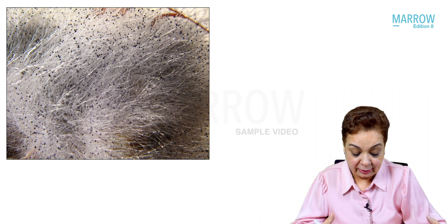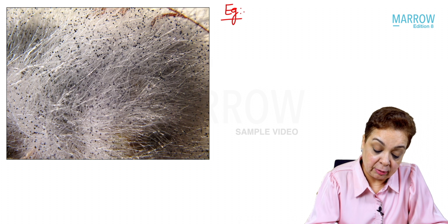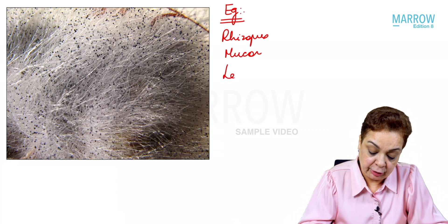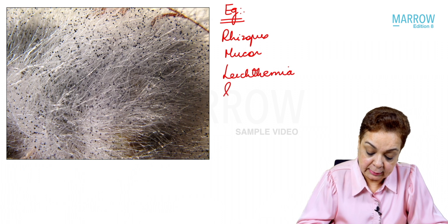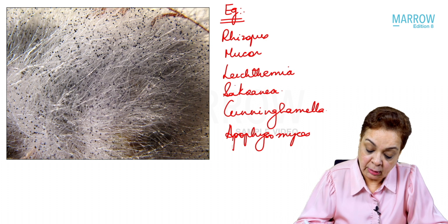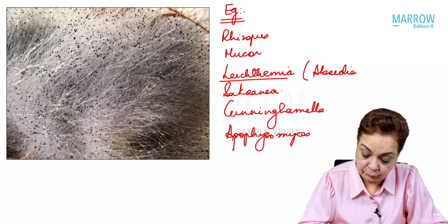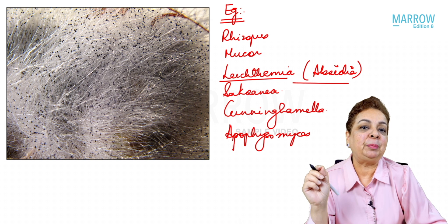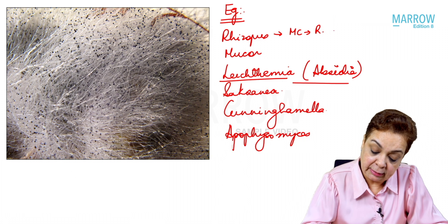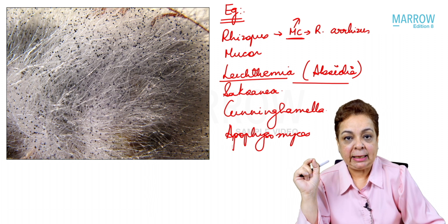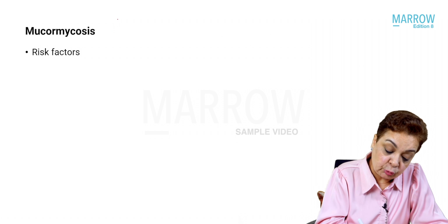Examples of Mucorales (Zygomucorales) include Rhizopus, Mucor, Lichtheimia (earlier called Absidia), Saksenaea, Cunninghamella, and Apophysomyces. Importantly, mucormycosis is not most commonly caused by Mucor — the most common cause is Rhizopus arrhizus.